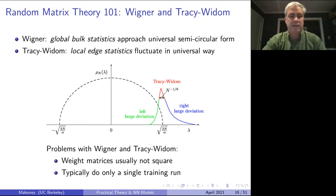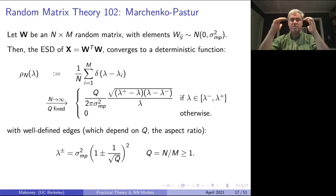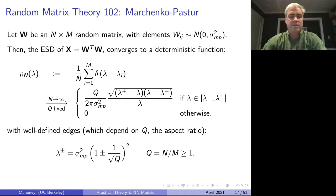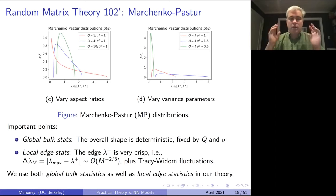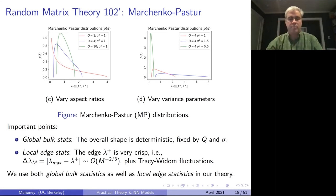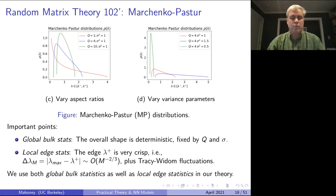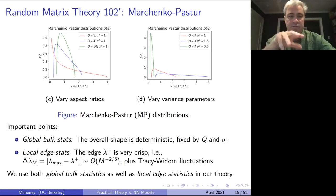Random matrix theory 102: weight matrices are not square and don't satisfy exactly the assumptions of the Wigner model. If you do 102, you get Marchenko-Pastur — you don't get a semicircle. If you have an M by N matrix, you get a functional form that depends on the aspect ratio and the variance scale, and all these have the same Tracy-Widom correction at the edge. So rectangular matrices: same ideas go through, you just get this other shape. When I'm saying things are heavy-tailed, I'm saying it's not this IID Gaussian or IID Gaussian universality class. So the best null model is 103.